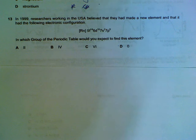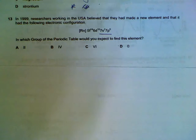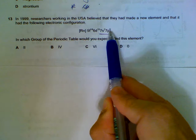Number 13, we have a new element. So if you look at the outer shell, 7 shells in total, and the number of outer electrons will be a total of 8. So we expect this to be found in group 0, together with the noble gases.